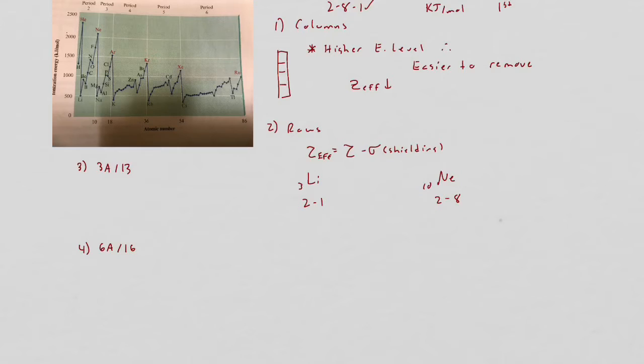If you look at the electron configurations, the electron being removed is from a higher energy level. For sodium, which has an electron configuration of 2-8-1, you're removing something from the third energy level. But for potassium it's from the fourth and rubidium from the fifth, and so on.